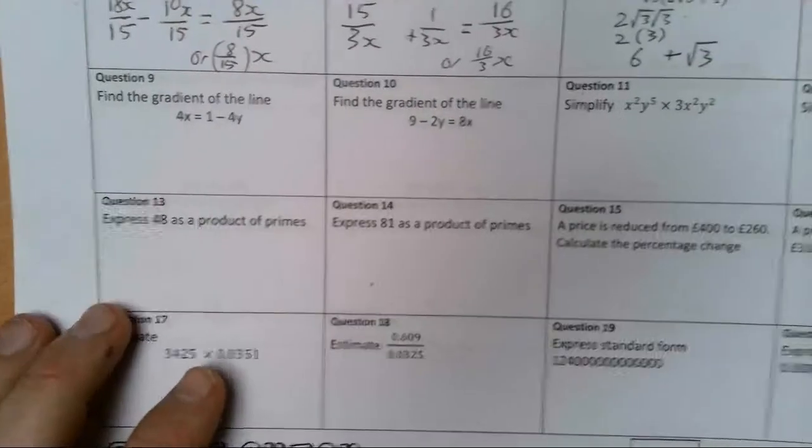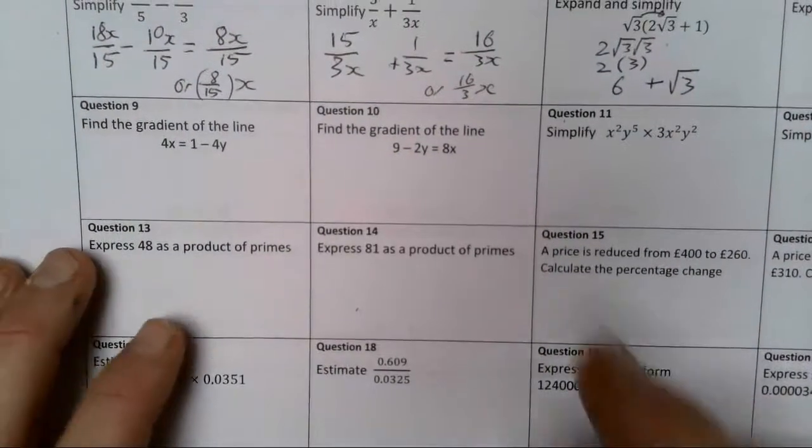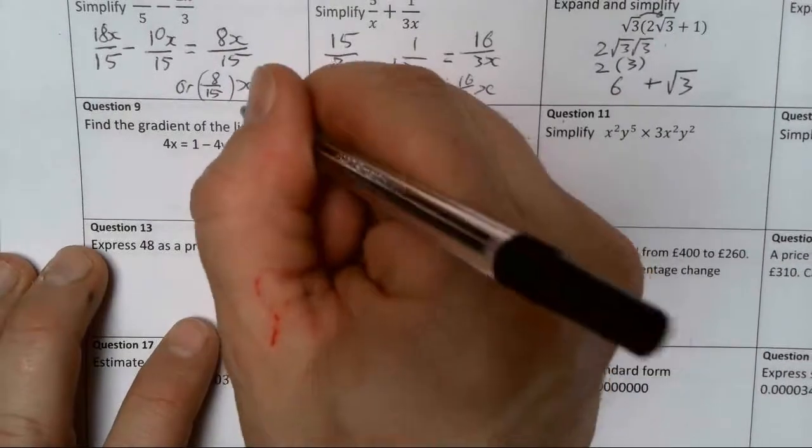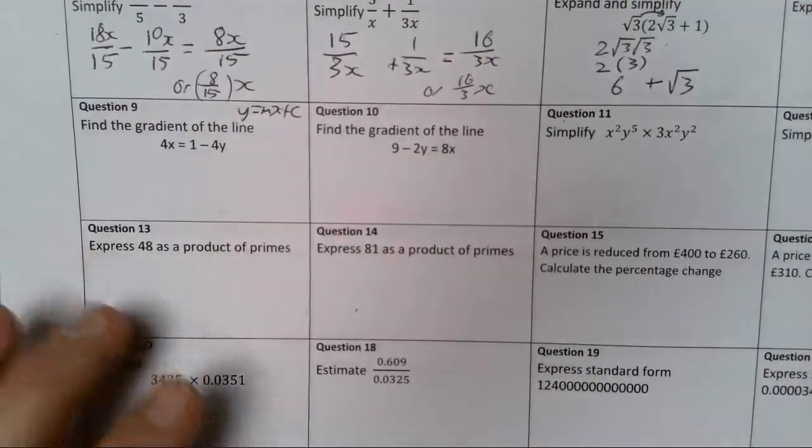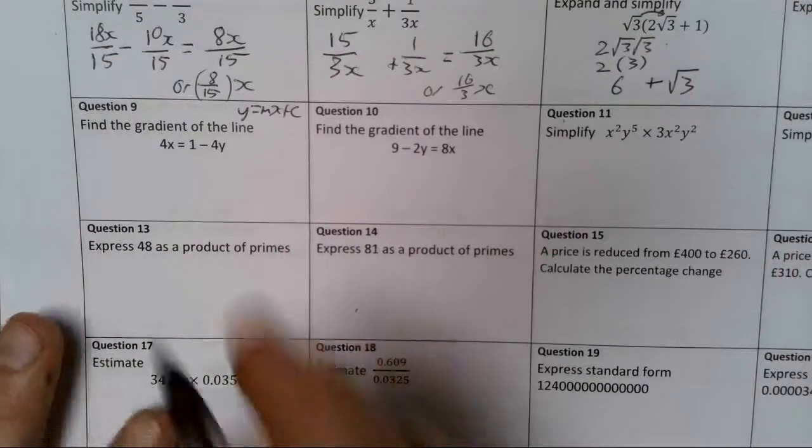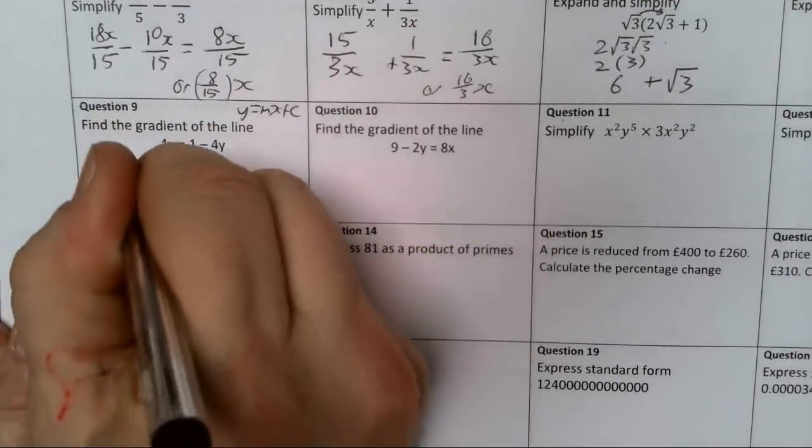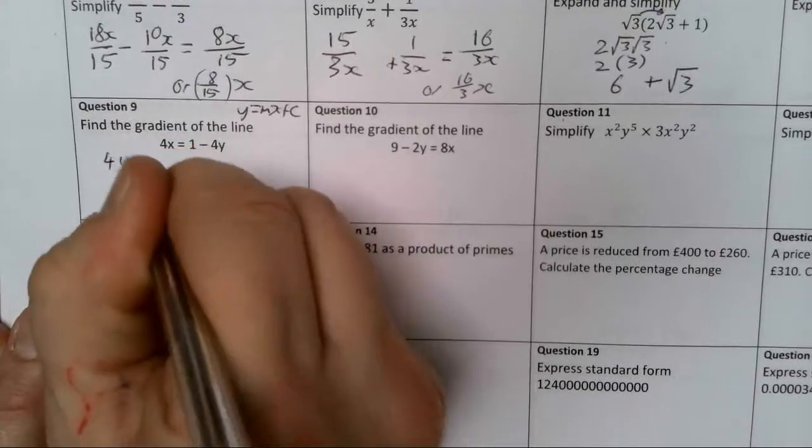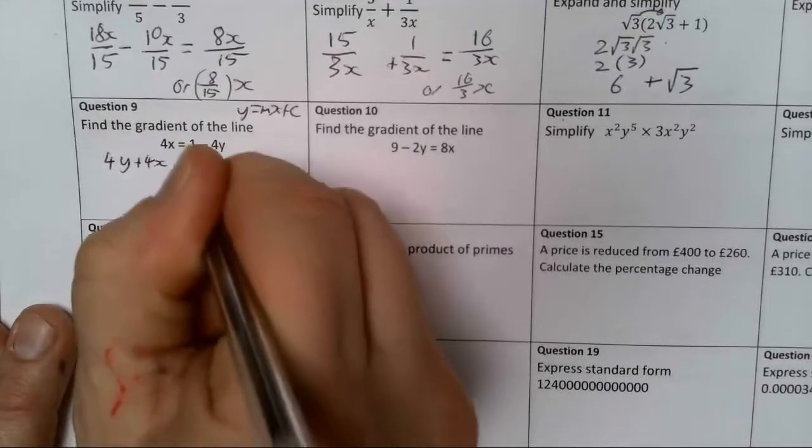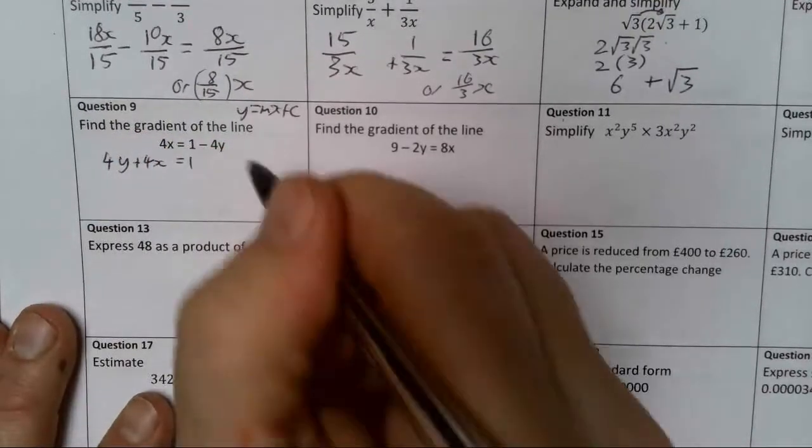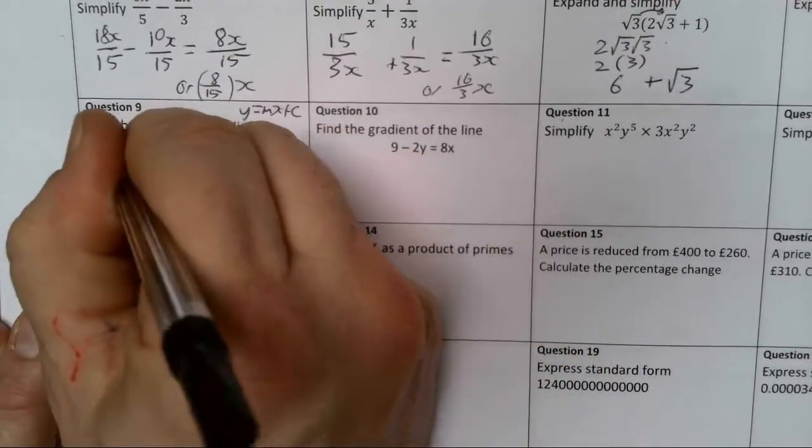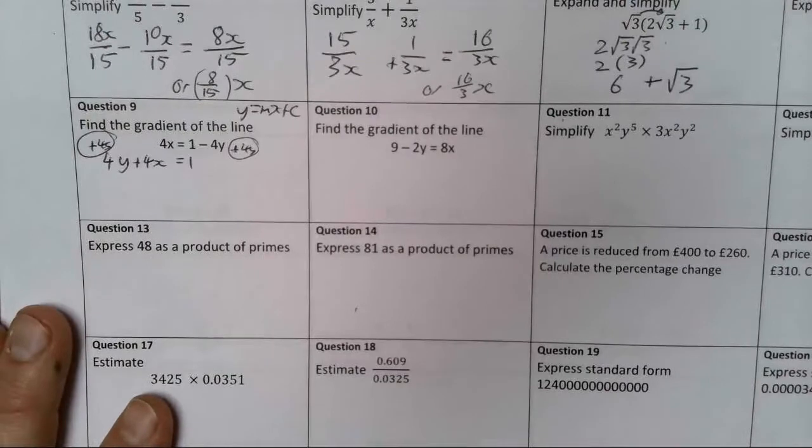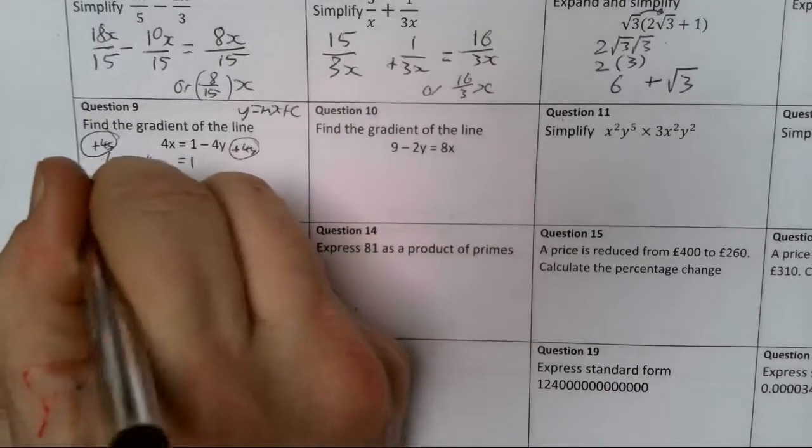Question 9, find the gradient of the line. I need to rearrange this into the form y equals mx plus c. So I'm going to do that. Let's add 4y to both sides, so that's 4y plus 4x equals 1. I just would rather deal with it as y equals mx plus c. So now I'm going to take away 4x from both sides.